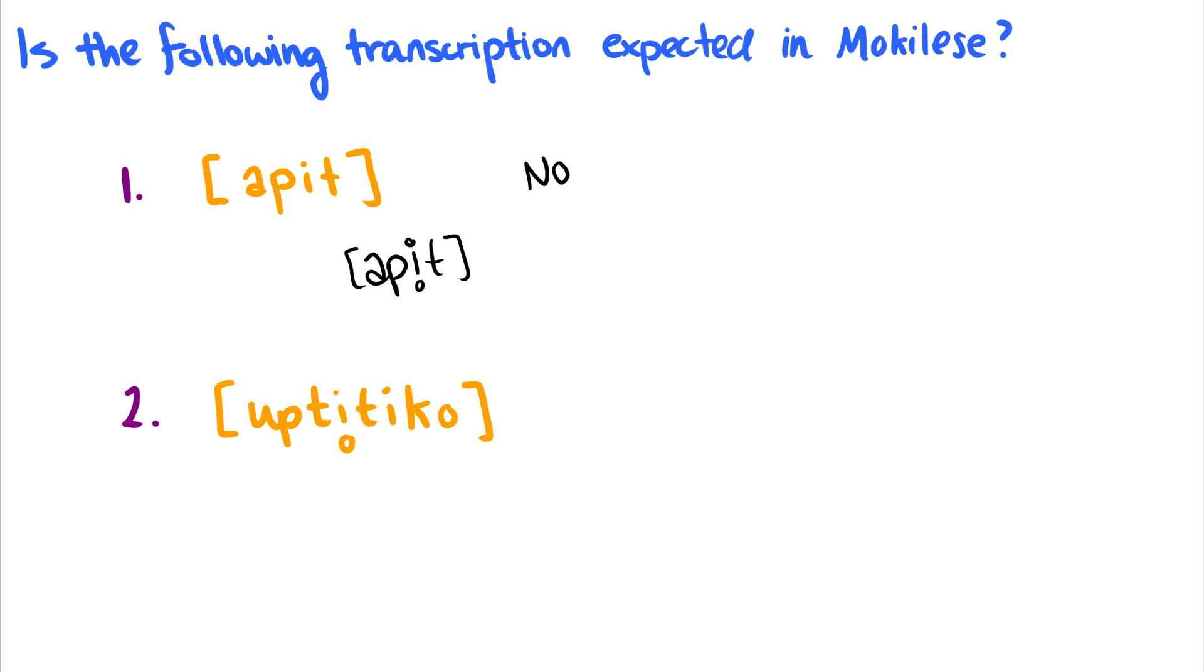Okay, what about [upti̥ko]? Okay, again, this is not good. And this is not good because although this [i̥] is voiceless, which is good because it's between two voiceless sounds, this second [i] is not, and it should be. So if this were to be a Mokilese word, we would expect it to be pronounced [upti̥ki̥o].